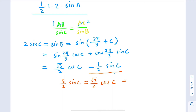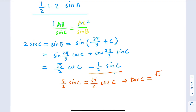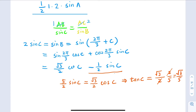From here, we get tangent C. Tangent C equals (√3/2) divided by (5/2), which simplifies to √3/5.